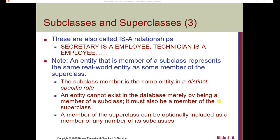Each subclass member is the same entity but in a distinct specific role. An entity cannot exist in the database merely by being a member of a subclass — it also has to be a member of the superclass. So if you have a technician, it's got to also exist as an employee. And if you have a member of the superclass, it can be optionally included as a member of any number of its subclasses, depending upon the distinction.